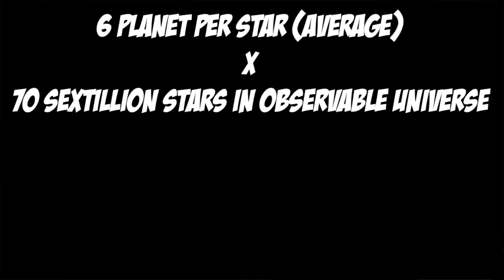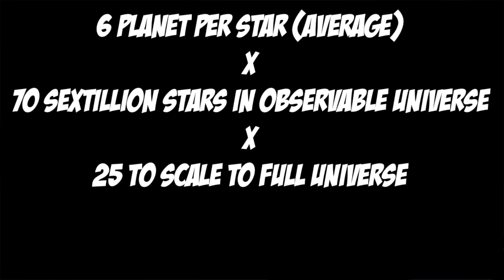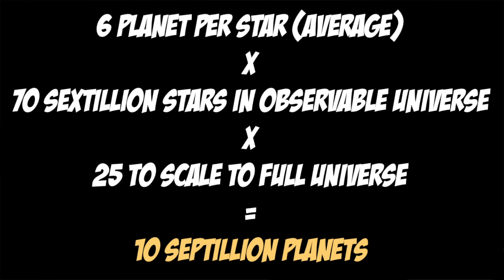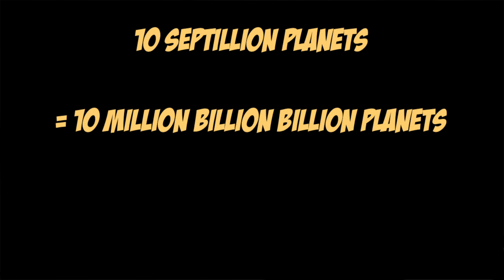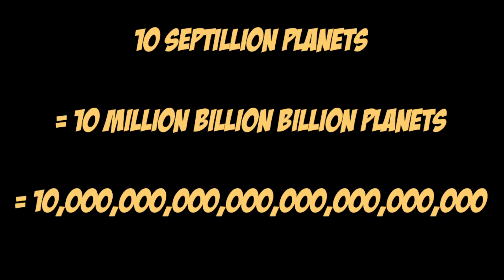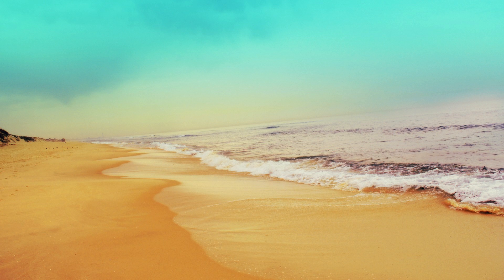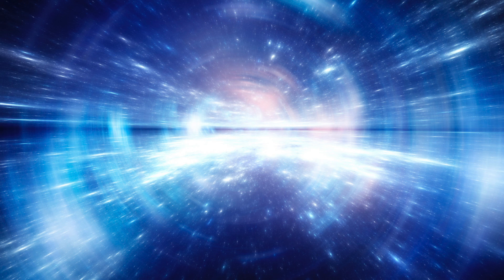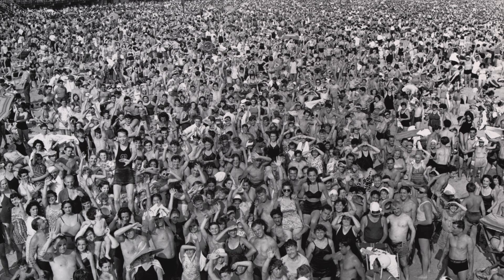Using the optimistic planet rate from the last video, multiplied by the number of stars in the observable universe, multiplied again by the increased volume of the full universe, gets us 10 septillion planets altogether. That's 10 million billion billion planets, or a one with 25 zeros after it. It's difficult to contextualize such a monstrous number — for example, it's a million times greater than the number of grains of sand on all the beaches in the world, 20 million times greater than the number of seconds which have transpired since the Big Bang, and 100,000 times greater than the number of heartbeats every human who has ever lived has ever had.